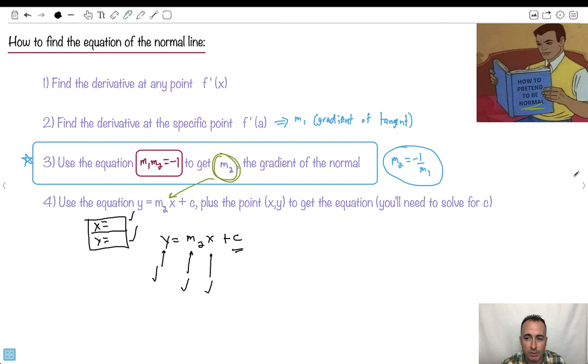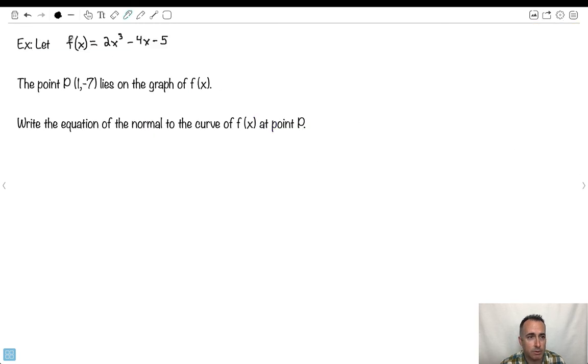Let's see how to do it with an example. So we'll do this one here. Let f(x) be 2x³ - 4x - 5. We're going to have this point P which is (1, -7). It lies on this graph. We want the equation of the normal at P. Let's first of all look at this and say, well what do we know from here? I know that the x value is 1 and the y value is -7. I know those two things from this.